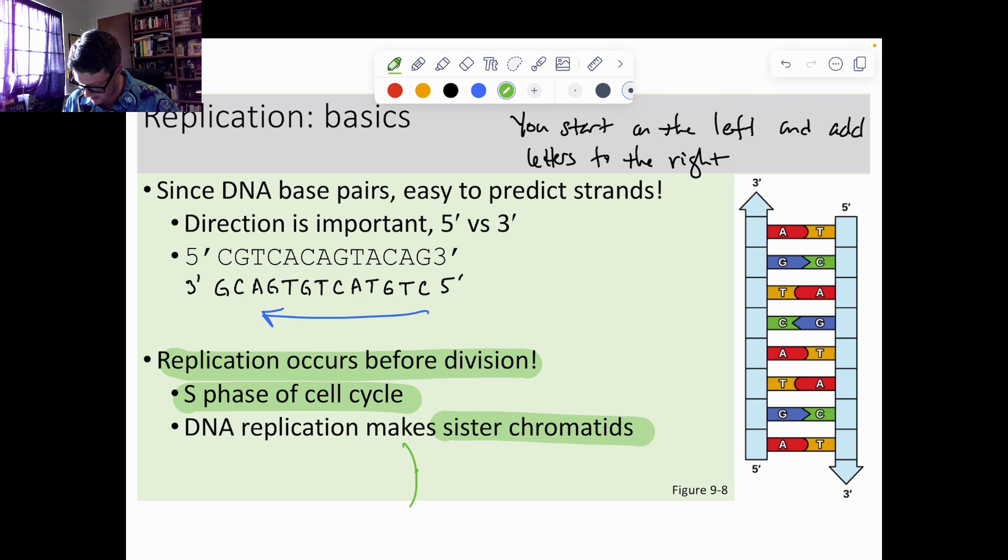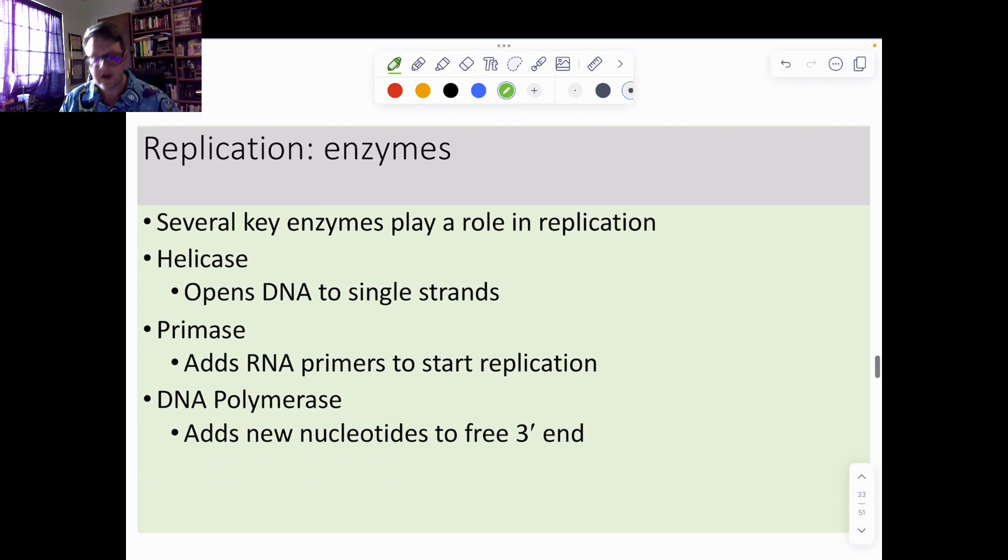And this DNA replication is going to be the source of our sister chromatids, meaning when we went from our single line to our double line, this is purely going to be due to DNA replication.